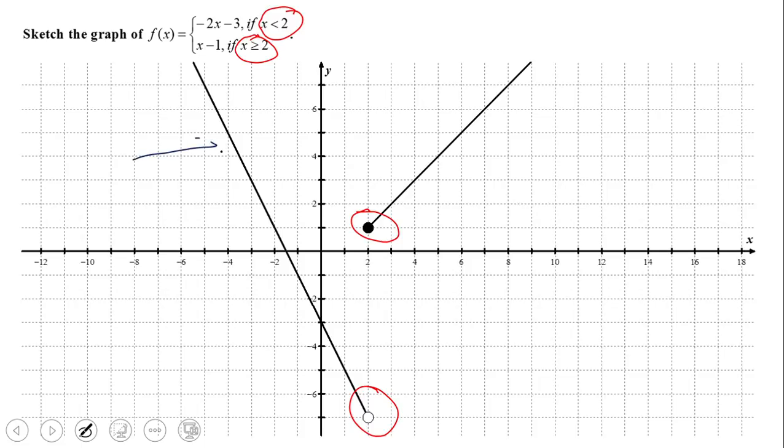And this side goes with the bottom piece of the piecewise function. So yeah, that is a piecewise function, a function that behaves differently on different intervals. When x is less than 2, the function behaves like negative 2x minus 3. When x is greater than or equal to 2, the function behaves like x minus 1. And in fact we're going to see an example right away.